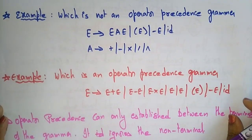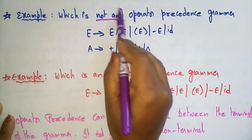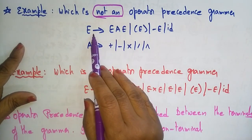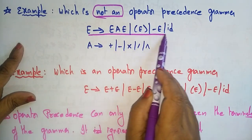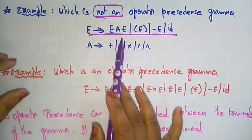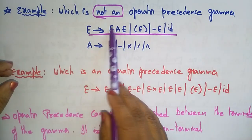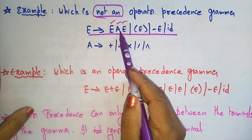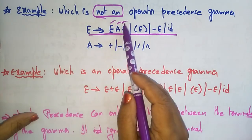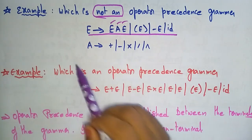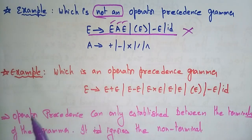Let's look at a grammar which is not an operator precedence grammar. This grammar is not operator precedence because the non-terminals are adjacent to each other — E, A, and E are all non-terminals placed side by side. So that's why this is not an operator precedence grammar according to our conditions.